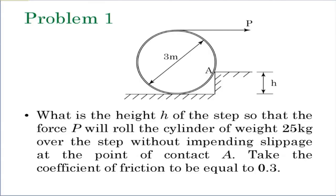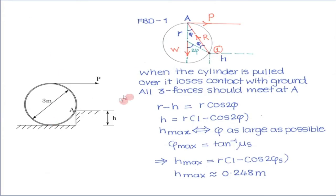I could see from the chat that many colleagues have done this problem properly. So let me go over the problem. What we are asked is the maximum height at which this can be rolled over. If you try to exert force on this, the cylinder will try to roll about point A; it may also try to slip — both things can happen — and it will lose contact here. When it loses contact here, the cylinder is in a somewhat hanging position. This is how the free body diagram of the cylinder will look.